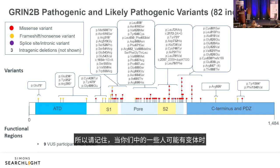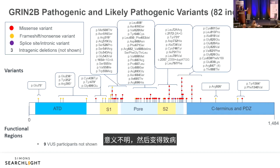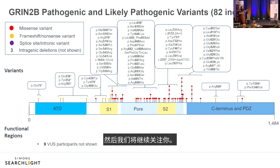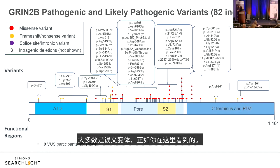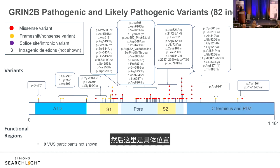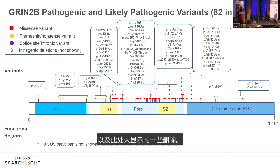The registry enrolls individuals with pathogenic or likely pathogenic variants, and also those with variants of uncertain significance that may be reclassified over time. The majority enrolled have missense variants. A lollipop schematic illustrates variant locations across GRIN2B, with each lollipop representing one individual. Frameshift, nonsense, splice site, and deletion variants are also represented.